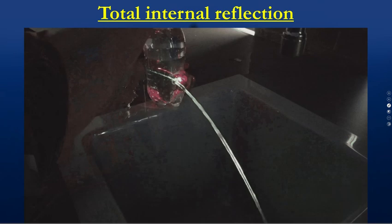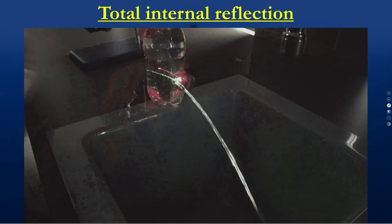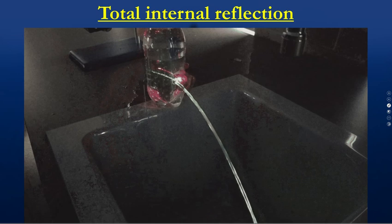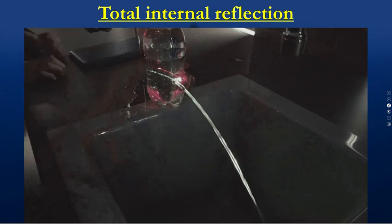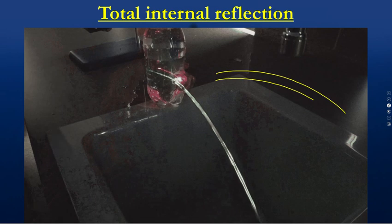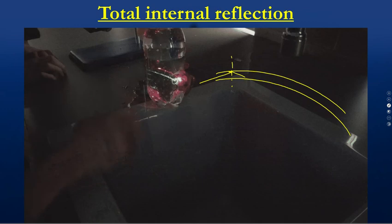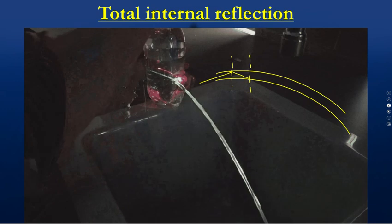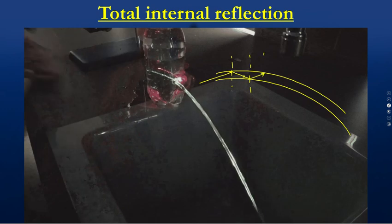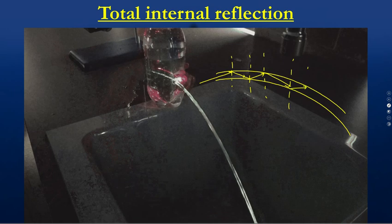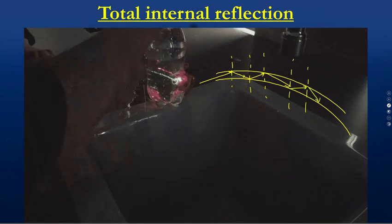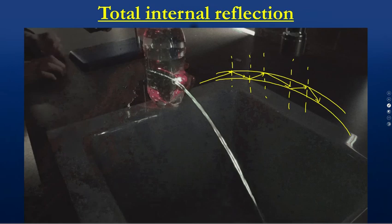Here's an example of total internal reflection — you can see light going through a beam of water. What's actually happening is: we have a beam of water, and as light goes through, we draw the normal line. It keeps reflecting and bouncing off the sides, which is what we're seeing in this animation.